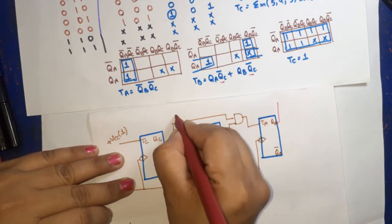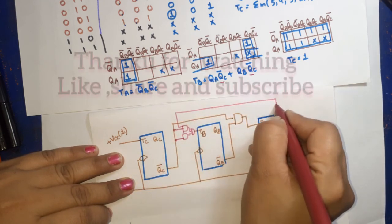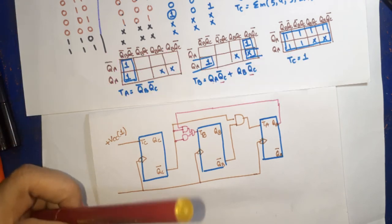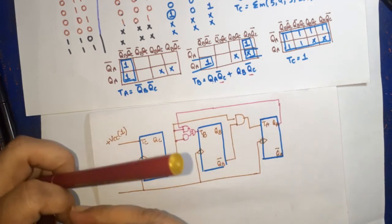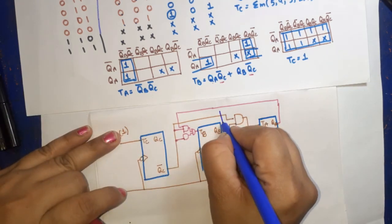Here in this circuit we have QB connections: QA, QC bar, and QB QC bar connections. The output goes to TB.